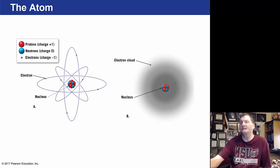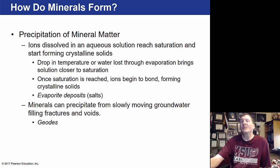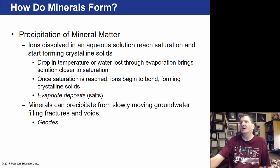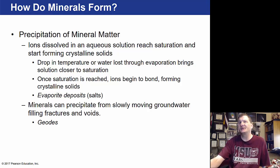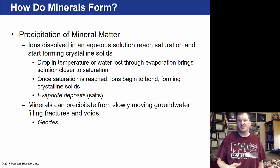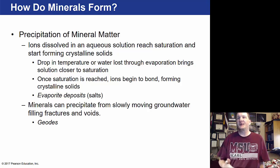How do minerals form? Most form from the precipitation of mineral matter. Ions of different materials dissolve in a water or a gel solution, become saturated, and start forming crystalline solids. A drop in temperature or water lost through evaporation can bring a solution closer to saturation, just like dew forms in the morning on the ground.